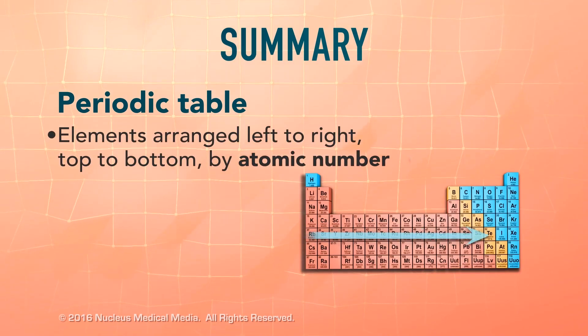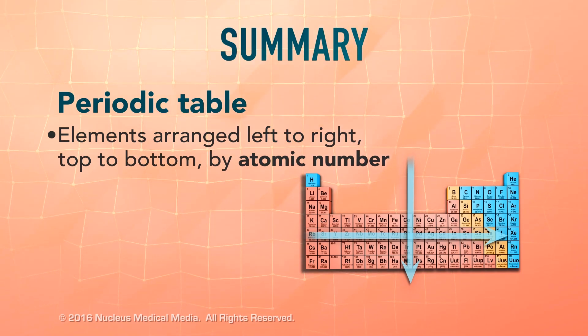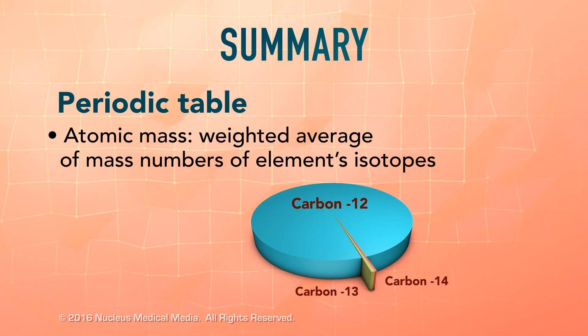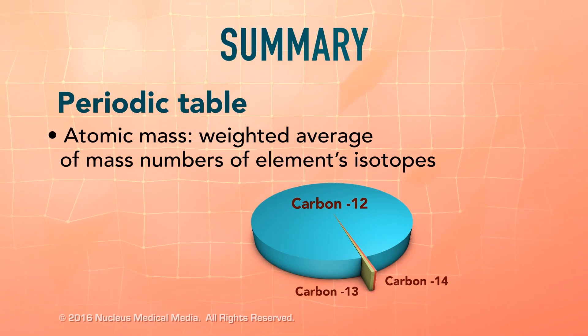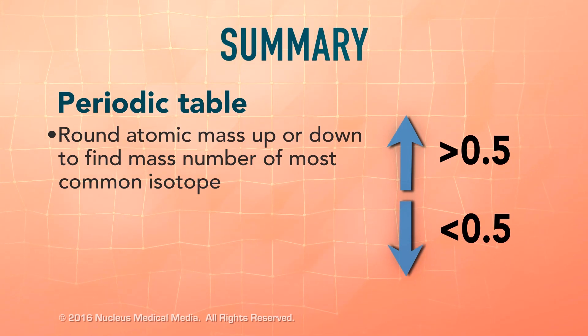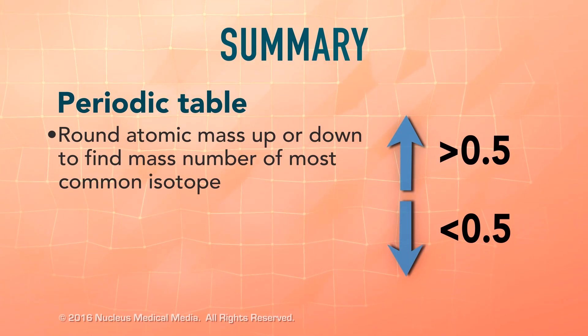Elements are arranged left to right and top to bottom by increasing atomic number. An element's atomic mass is a weighted average of its isotope's mass numbers. Round the element's atomic mass up or down to find the mass number of its most common isotope.